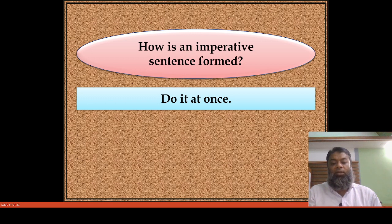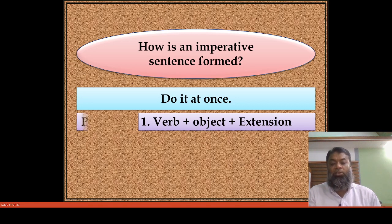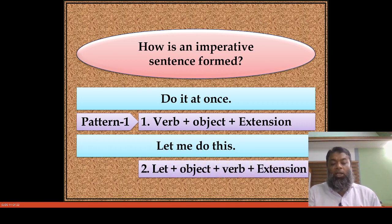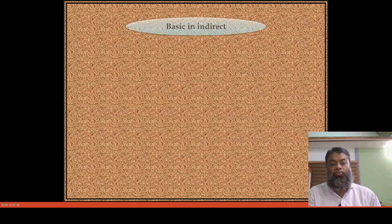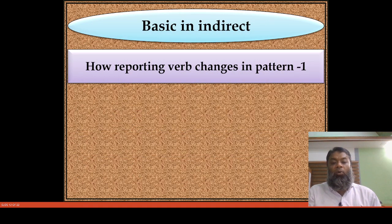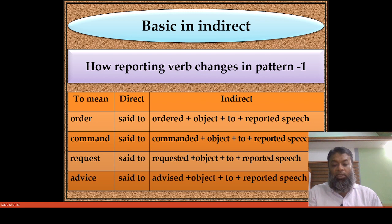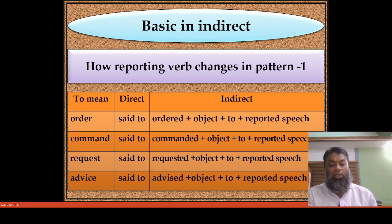How is it formed? Pattern one: the base form of the verb — structure is verb plus object plus extension. Pattern two starts with 'let': let plus object plus 'to' plus reported verb. If you get a command, change 'said to' to 'commanded' — subject plus 'to' plus reported speech. If you get a request, change 'said to' to 'requested'. If you get a suggestion or advice, use 'advised' plus object plus 'to' plus reported speech.